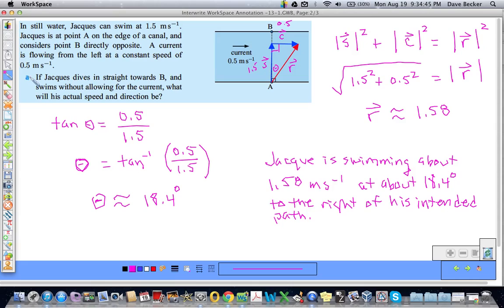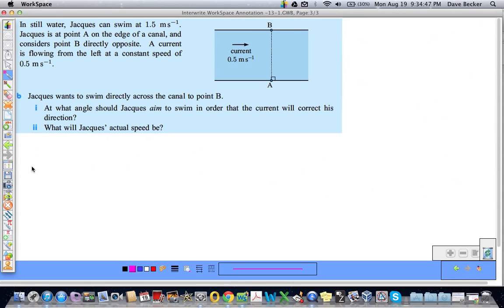Okay. Well, there's a part A here, so there's going to be a part B. Let's take a look at that. Same scenario, I just pasted part B here. Jacques wants to swim directly across the canal to point B. So he wants to end up here. At what angle should Jacques aim? In other words, which way should he go at what angle to swim in order that the current will correct his direction?